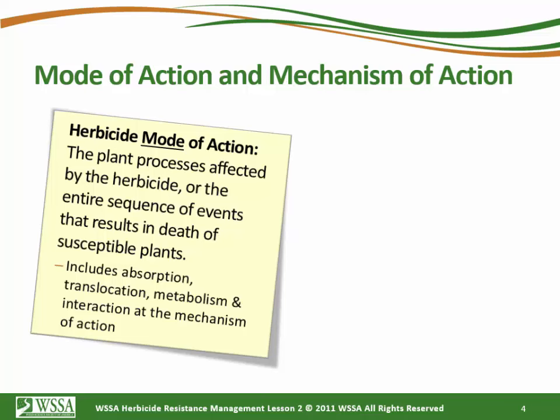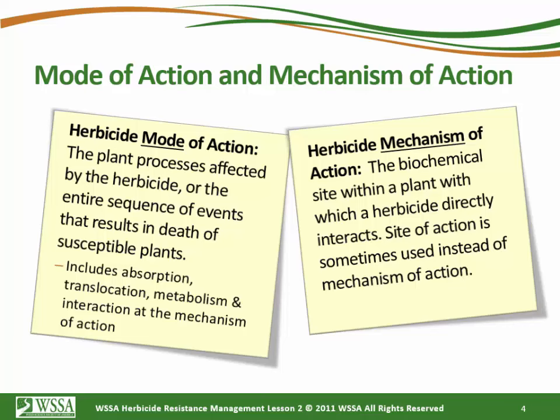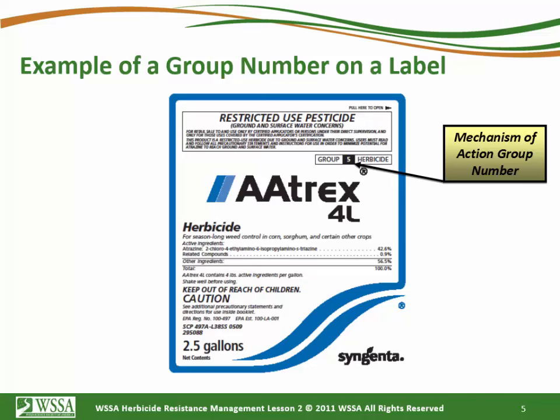The term mode of action refers to all the processes affected by that herbicide — the entire sequence of events it takes to kill or injure the plant. Mechanism of action, sometimes referred to as site of action, is the specific biochemical site or process that occurs. The group number now being voluntarily listed on labels by most companies helps classify herbicides based on their mechanism of action.